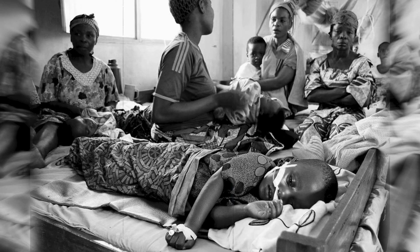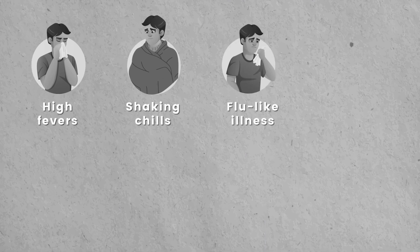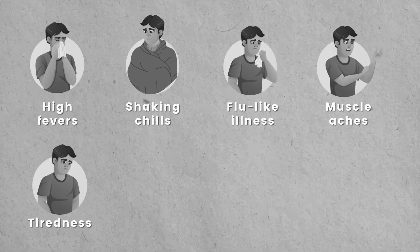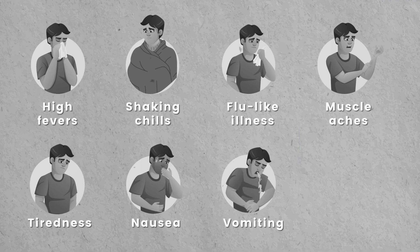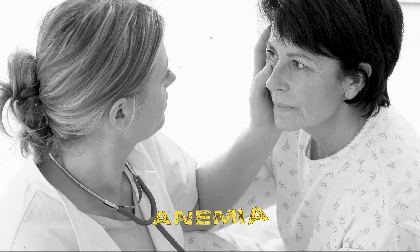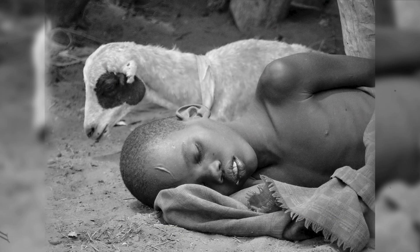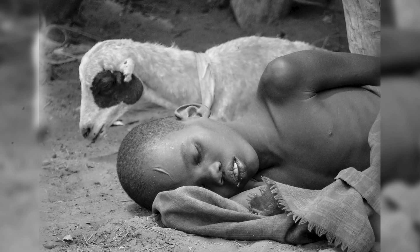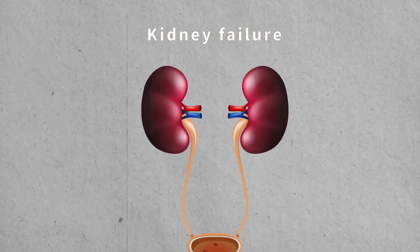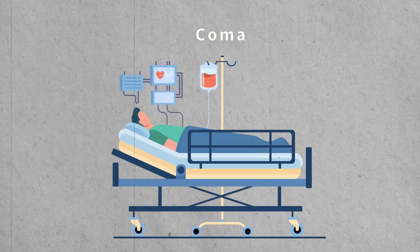People who get malaria are typically very sick with high fevers, shaking chills, and flu-like illness, including muscle aches, tiredness, nausea, vomiting, and diarrhea may also occur. Malaria may cause anemia and jaundice because of the loss of red blood cells. If not promptly treated, the infection can become severe and may cause kidney failure, seizures, mental confusion, coma, and even death.